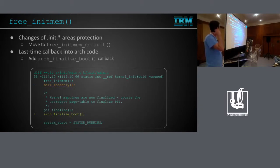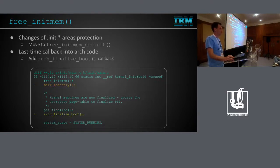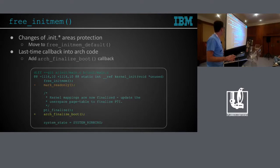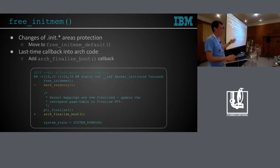X86 has its own way to deal with memory protections because of security — it does some calls to internal x86 generic implementation of memory protection changes. The free_initmem function has a lot of things not strictly necessary to free init memory, but since it's the last point that generic start_kernel calls into architecture code, almost every remaining place uses it to do some final initialization things like late memory protection or changing a variable to say we've done the boot.